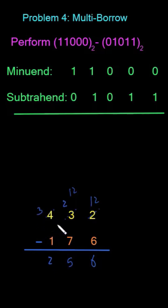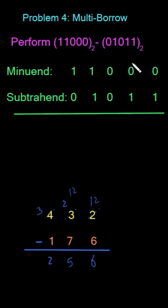The bottom line is this: borrowing one in decimal, which is base-10, gives us 10 in the current column, because these numbers are base-10. Similarly, these are binary numbers and it is base-2. That is why borrowing one from the next column will give us 2 in the current column. Let's do this now.